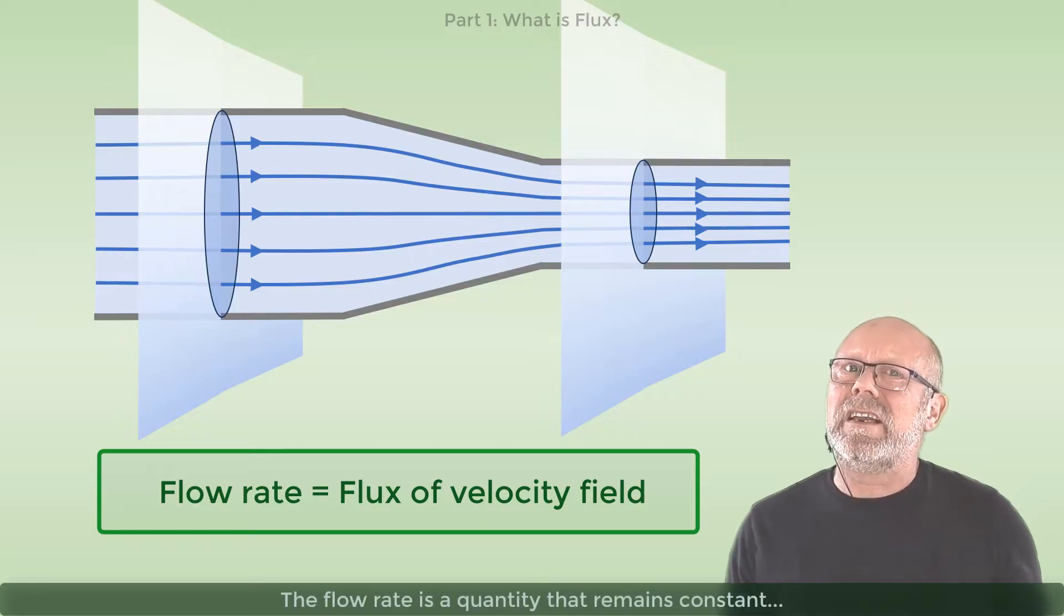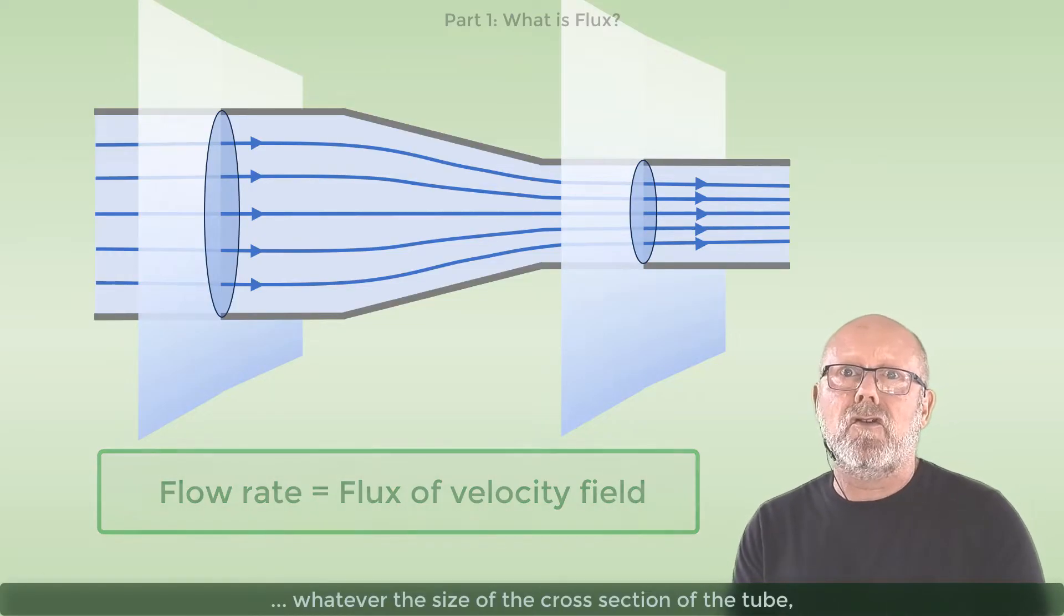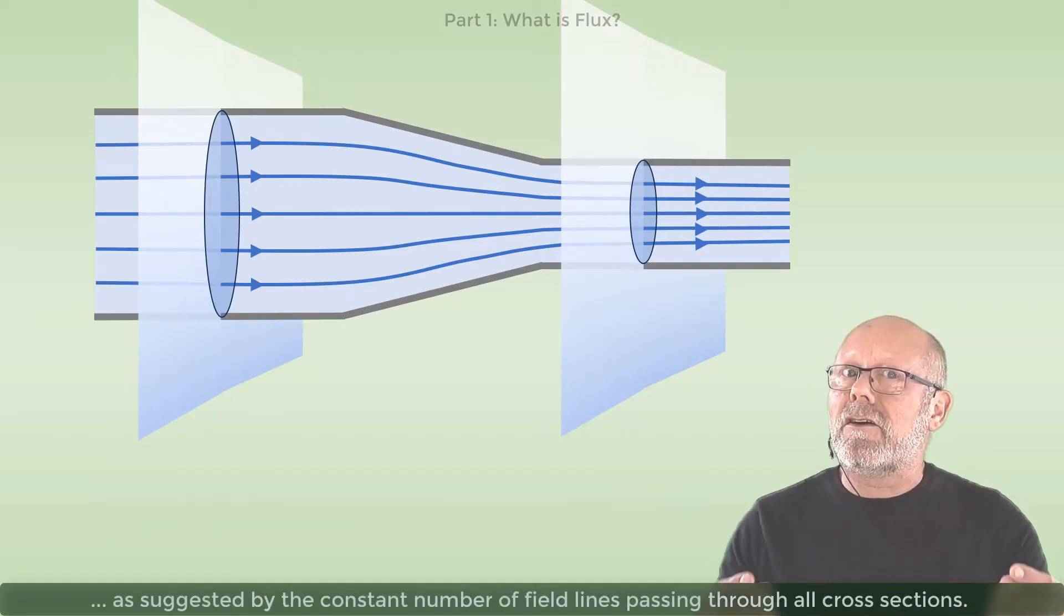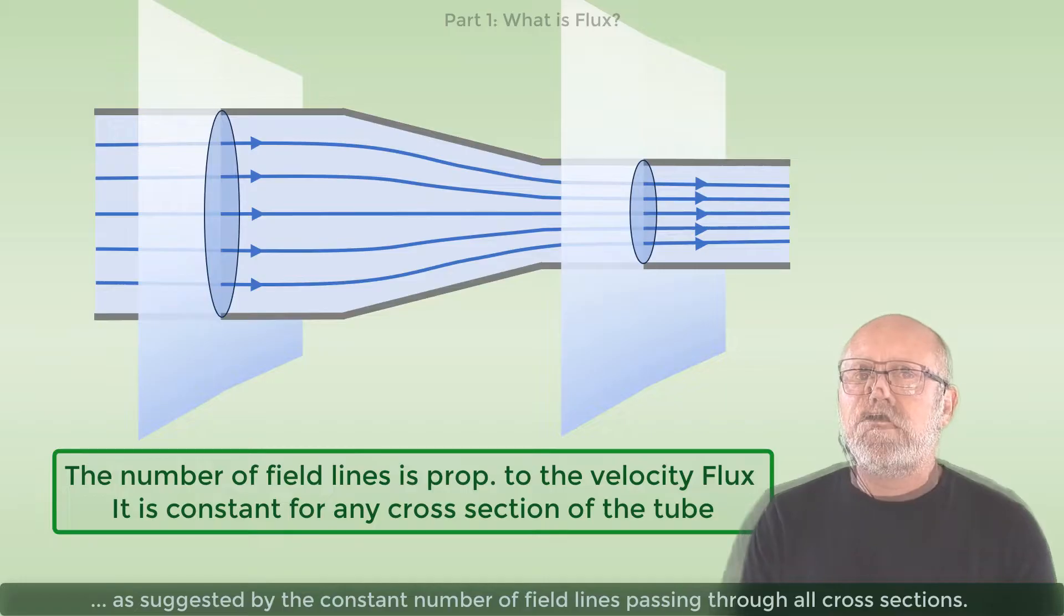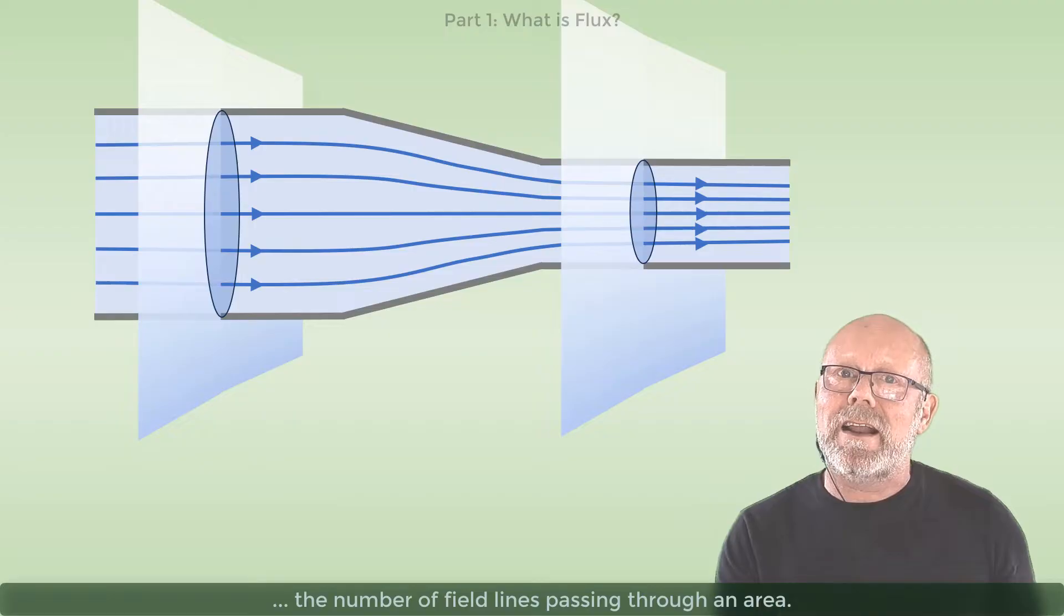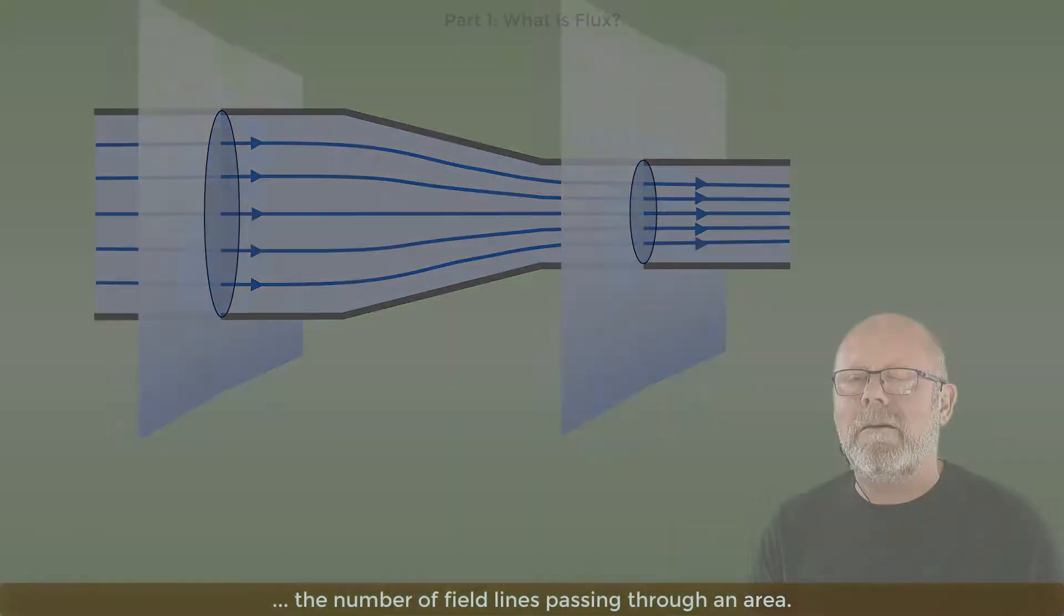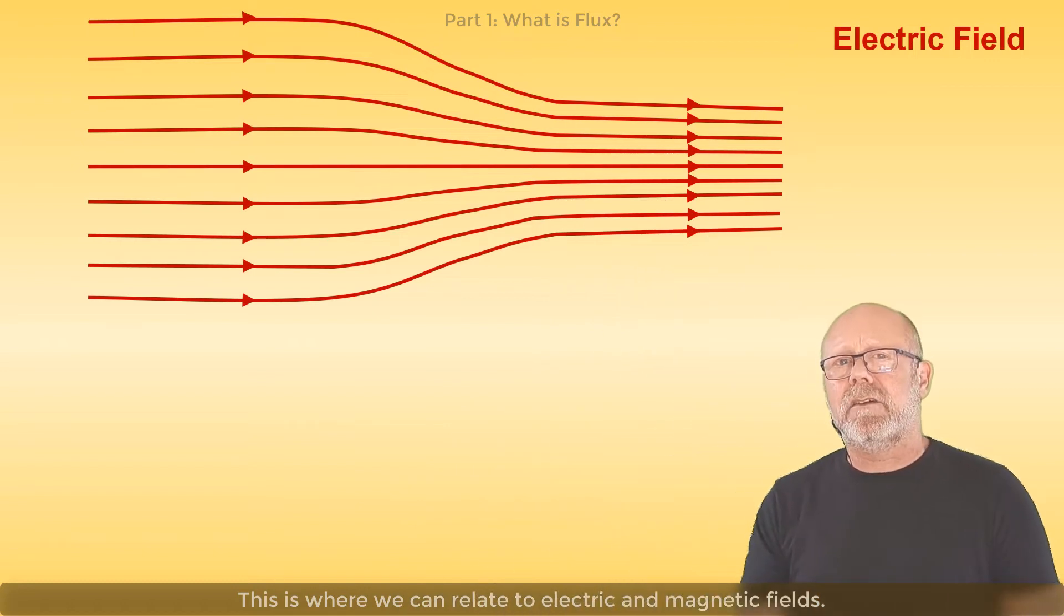The flow rate is a quantity that stays constant whatever the size of the cross-section of the tube, as suggested by the constant number of field lines passing through all cross-sections. The flux, or here the flow rate of water, is represented by the number of field lines passing through an area. This is where we can relate to electric and magnetic fields.